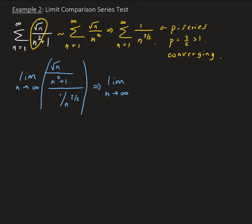So now, simplifying this, we're going to get root n over n squared plus one. Take the reciprocal of the denominator and we're going to get n to the three halves over one.